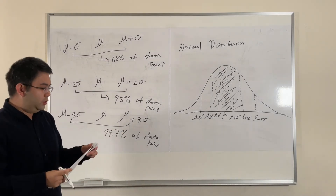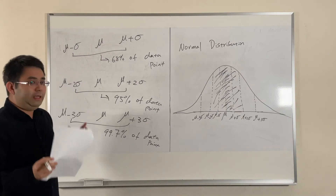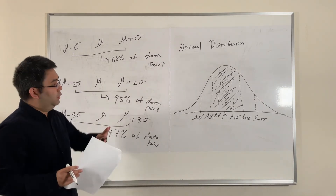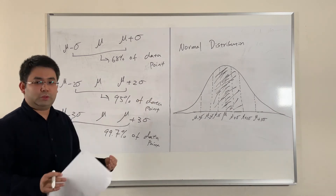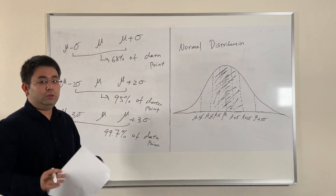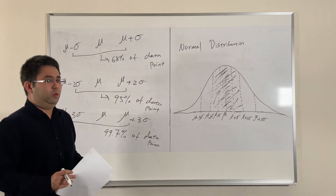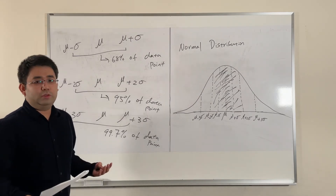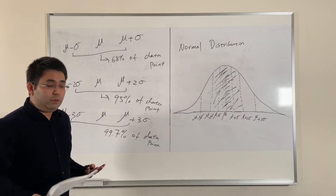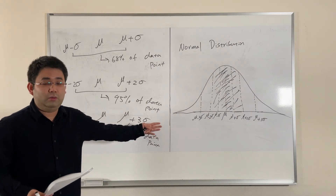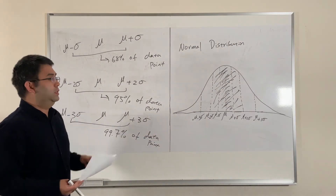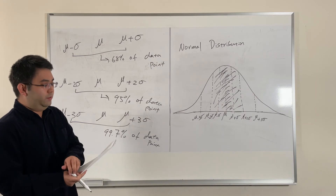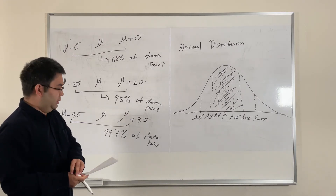Next, I want to answer the question: what if we don't know the distribution? Before, we assumed we know the normal distribution, but what if we don't know the distribution, or it's not a normal distribution? Are we able to answer the same question? The answer is yes, and it relies on the concept of Chebyshev's inequality.